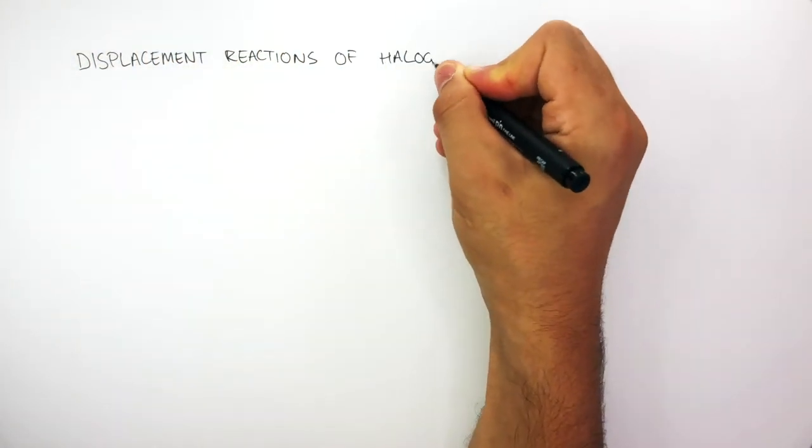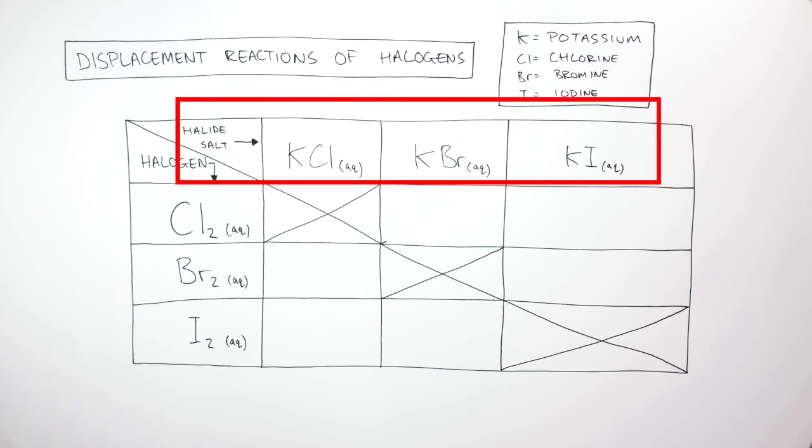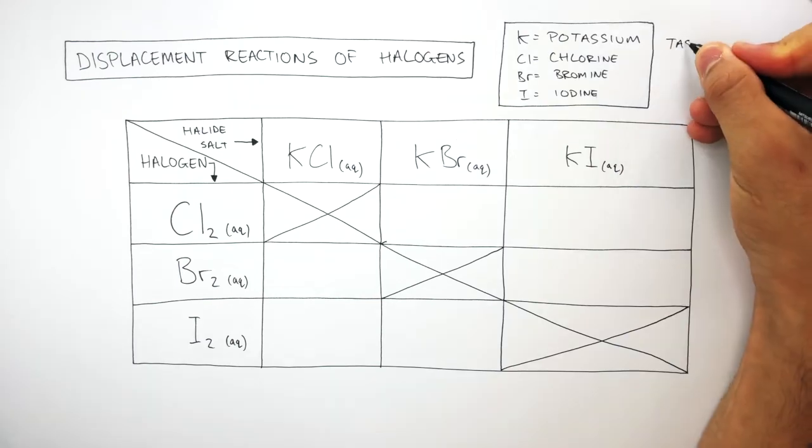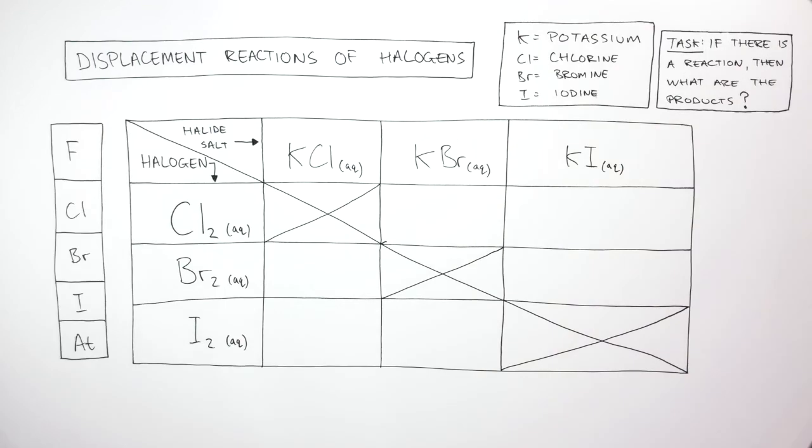You're now going to complete this task about displacement reactions of halogens. This column shows the halogen solution and this row shows the halide salt solutions: potassium chloride, potassium bromide, and potassium iodide. Your task is to determine if there is a reaction, and if so, what are the products. If there isn't a reaction, write 'no reaction.' If there is, write the products in chemical formula. Pause the video to complete the task.